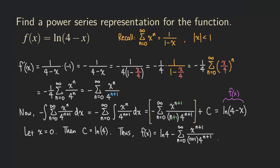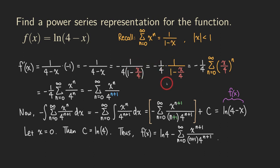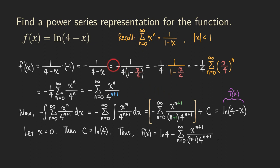So sometimes a function isn't in the form one over one minus x. For certain functions we can differentiate or integrate to get it into that form, find the power series, and then reverse the process. If we differentiated to get the form, we integrate to get back; if we integrated, we differentiate to get back.